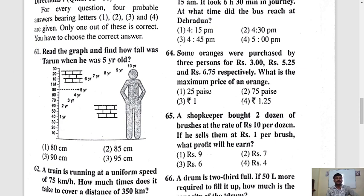Question 61. Read the graph and find how tall was Tarun when he was 5 year old. They gave a graph here, Tarun. When he was 1 year old, he was 40 cm. Then 2 year 60 cm, 3 year 70 cm, 4 year 80 cm, then 5 year 90 cm. Where is the answer? The third one is the answer 90 cm.